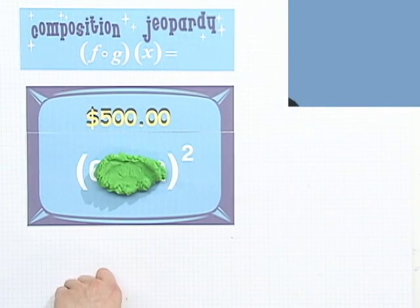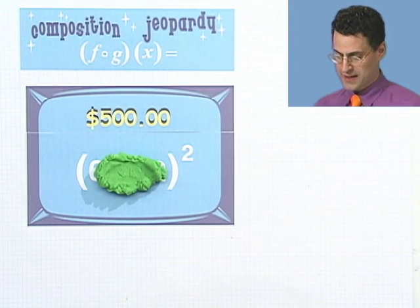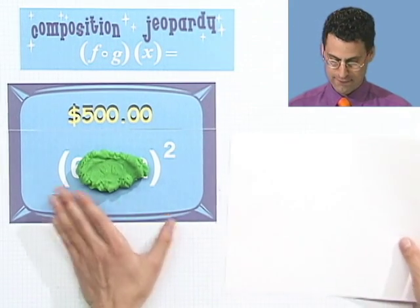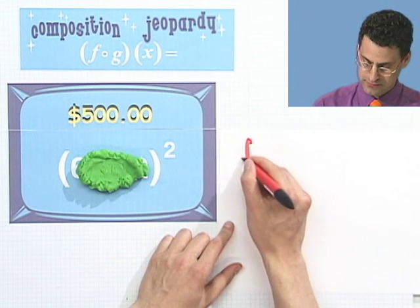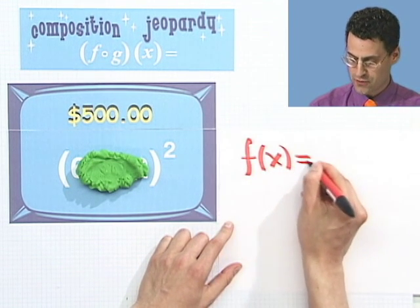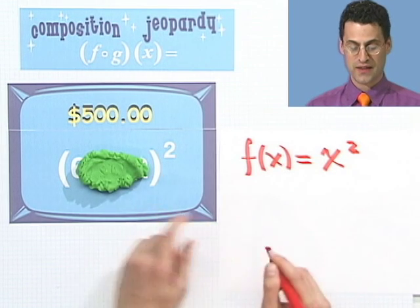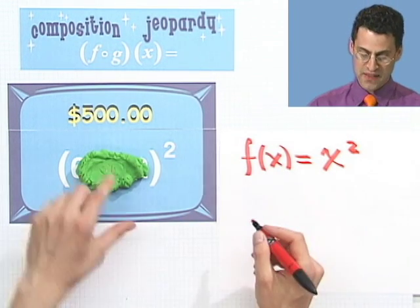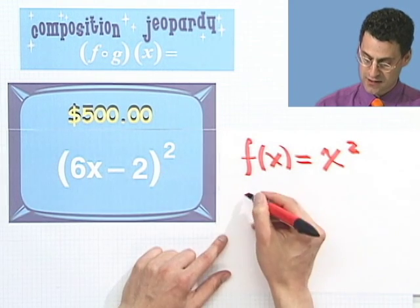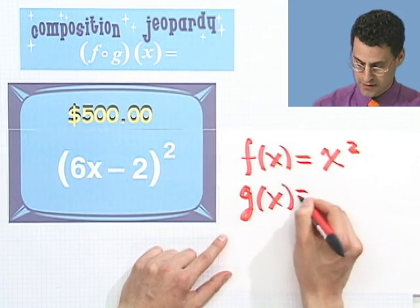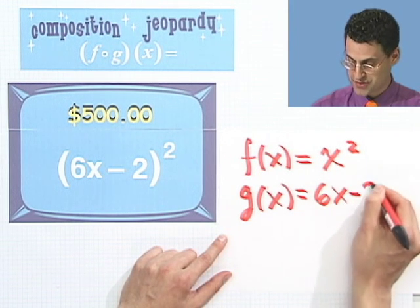So that's the f. So it seems to me, here's my thinking, let's let f of x equal x squared. That's the outside function. And then the inside function, that's the thing I have to do first. Well, that should be the stuff that's on the inside. So g of x equal 6x minus 2.